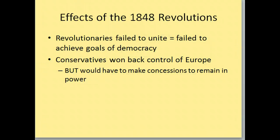The overall effects of the 1848 revolutions: they didn't work out because the revolutionaries failed to unite, which means they didn't achieve their goals of getting democracy or their own independence. The conservatives win back control of most of Europe, but in order to remain in power they have to make some concessions — compromises — whether they start to have more of a parliament or they gave independence to one little part like Poland.